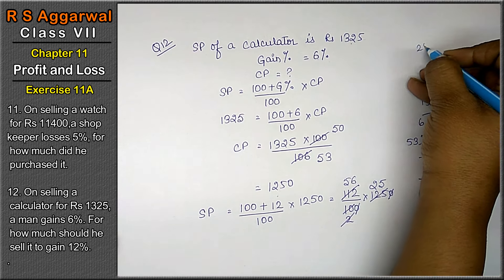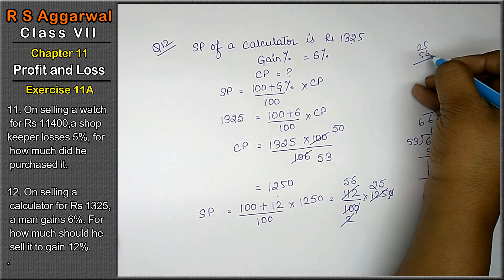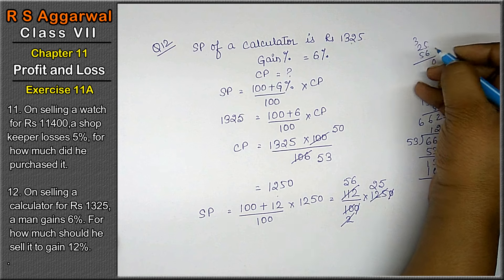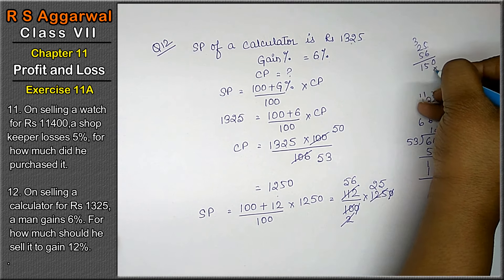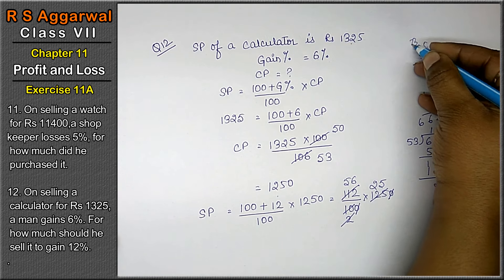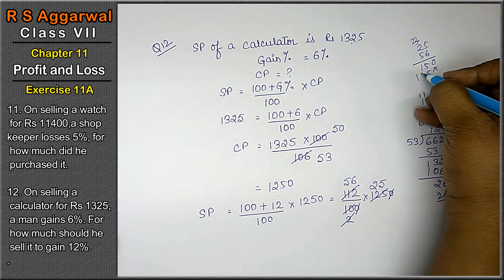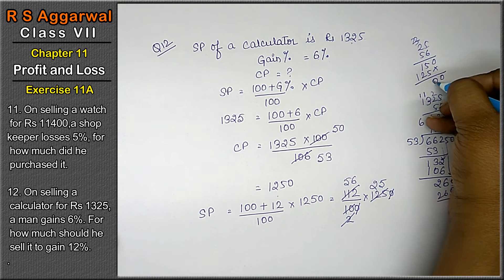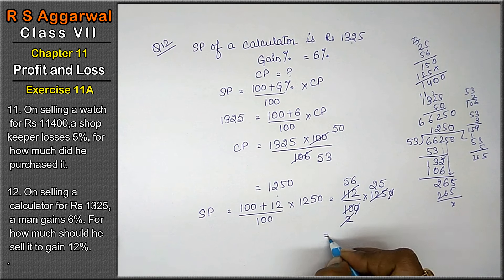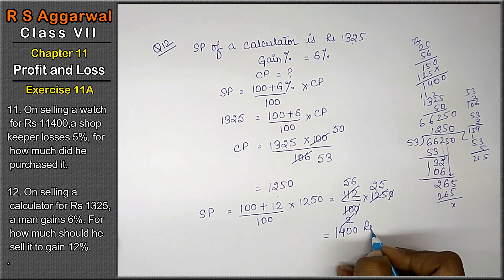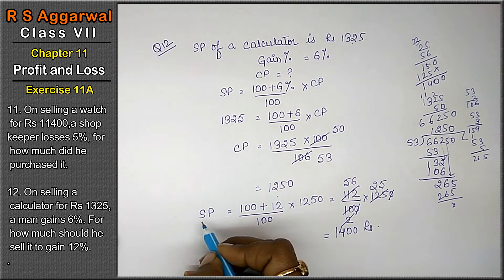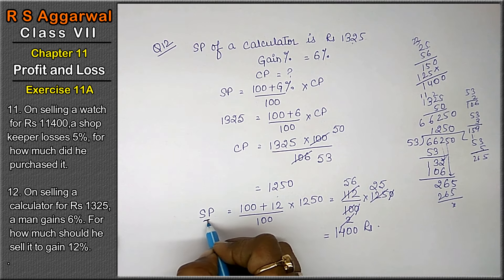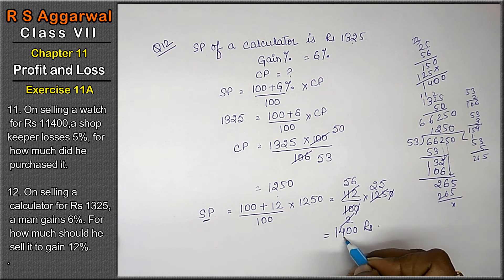Now 25 into 56: 6 × 5 is 30, 6 × 2 is 12, 13, 14, 15. 5 × 5 is 25, 5 × 2 is 10, 11, 12, 0, 0, carry 4 and 1. That means the answer will be 1,400. For gaining 12 percent, he has to sell his calculator for 1,400 rupees.